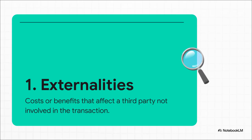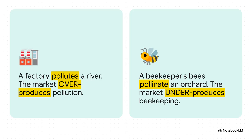You can think of externalities as economic side effects. A buyer and a seller make a deal, but someone else — a third party who had nothing to do with it — ends up feeling the impact, either good or bad, and that impact isn't reflected in the price. There are two flavors: negative externalities, like a factory polluting a river. The cost of that pollution isn't paid by the factory, so the market ends up making way too much of whatever that factory produces.